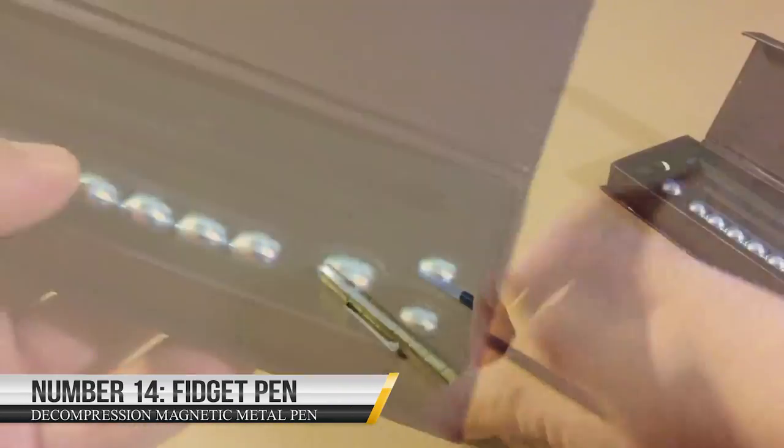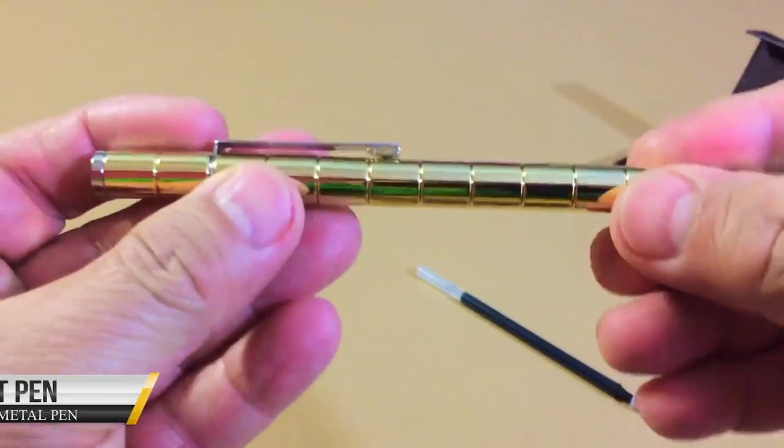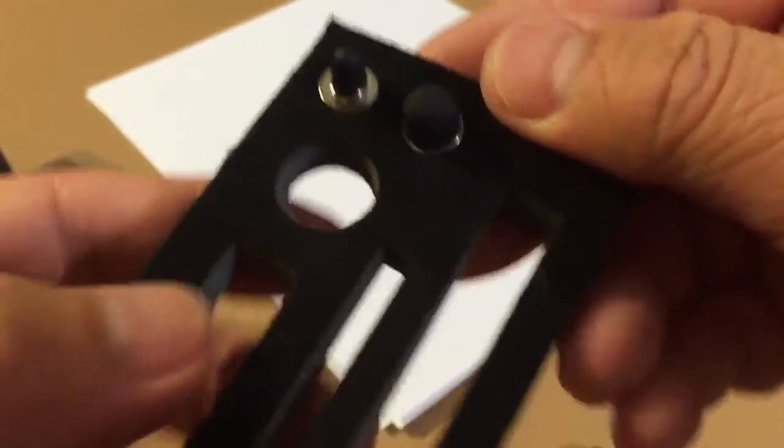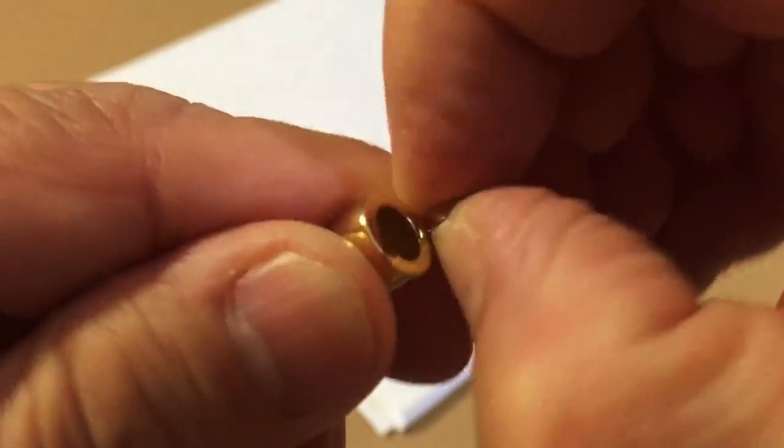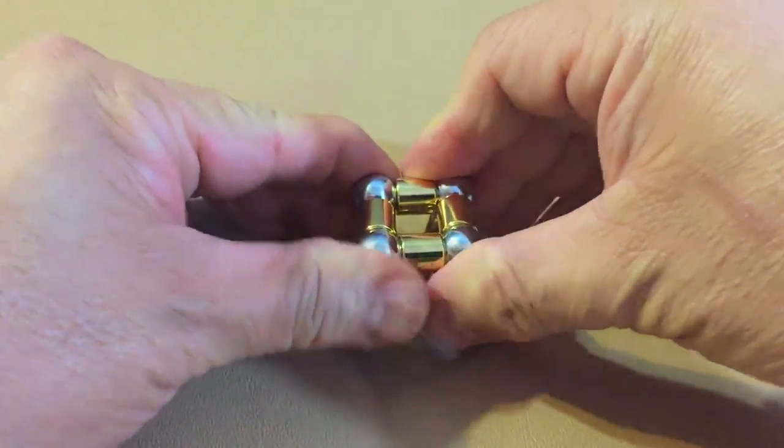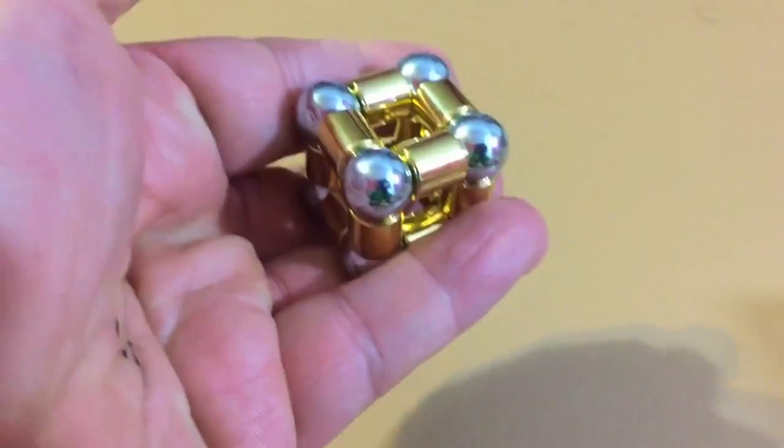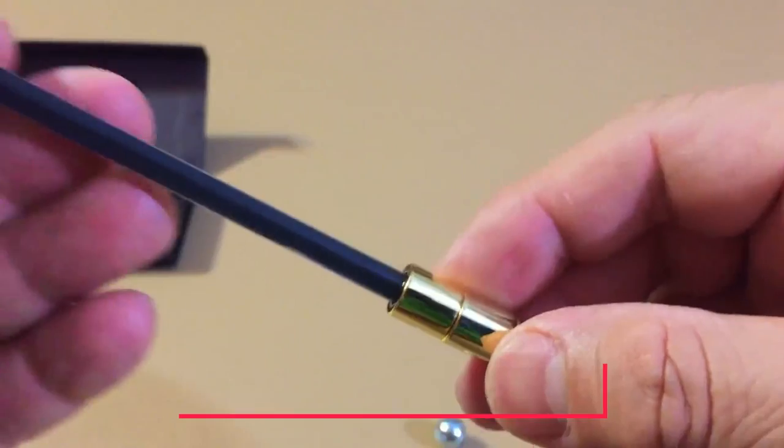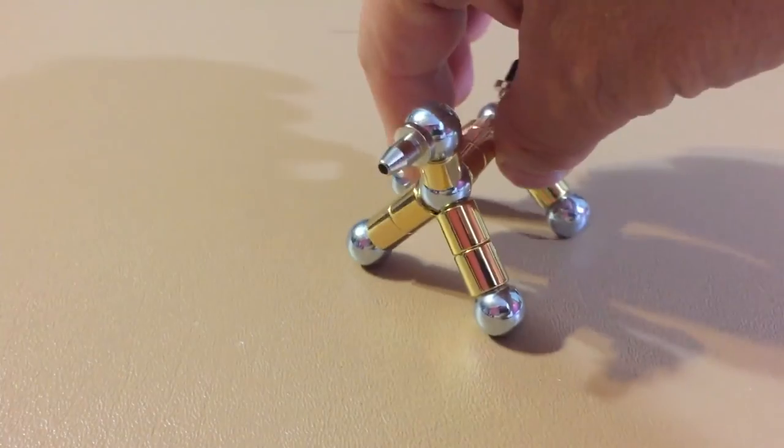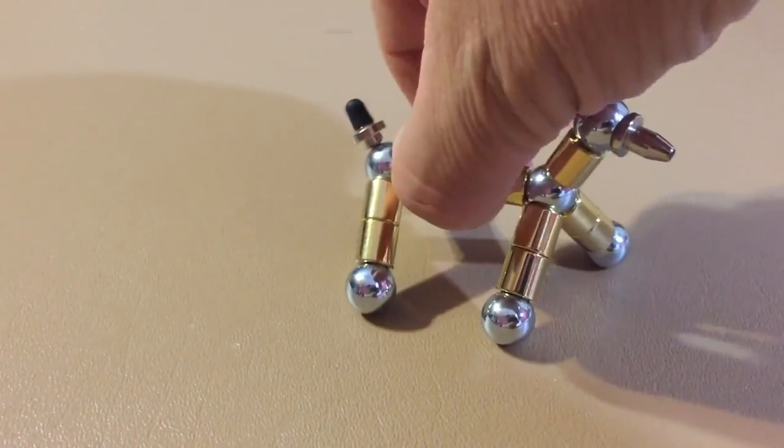Number 14: Fidget Pen Decompression Magnetic Metal Pen. This is a unique finger-fidget toy and pen capable of changing shape to your desired option. It's a good toy that can help you pass the time well. By rotating parts of it, you can make the pen into various creative options. It sells for just $23 and would significantly advantage pupils, teachers, or other people working in offices.